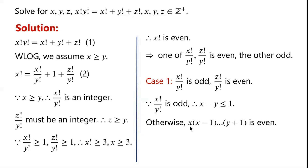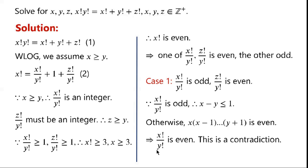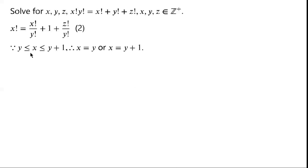Otherwise, x times x minus 1 times so on times y plus 1 is even, as the product of any 3 consecutive numbers must be even, which implies x factorial over y factorial is even — a contradiction. So x minus y must be less than or equal to 1. Because x is greater than or equal to y and x is less than or equal to y plus 1, either x equals y or x equals y plus 1.